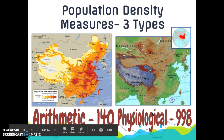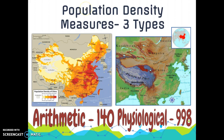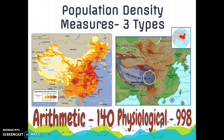China is another example: its arithmetic density is 140, but the physiological density is 998. This is because the population is highly clustered in the east where land is more arable, while places like the Gobi Desert and the Plateau of Tibet — which is very mountainous — are mostly uninhabited and not suitable for farming.